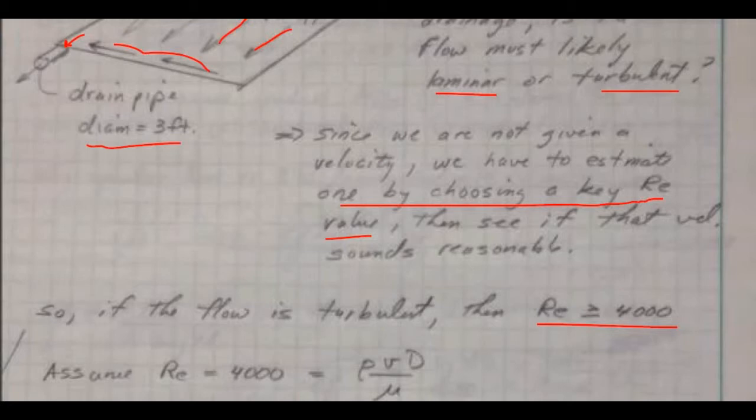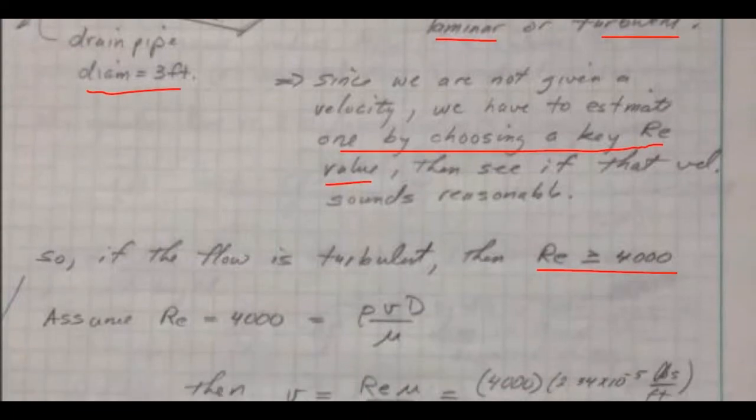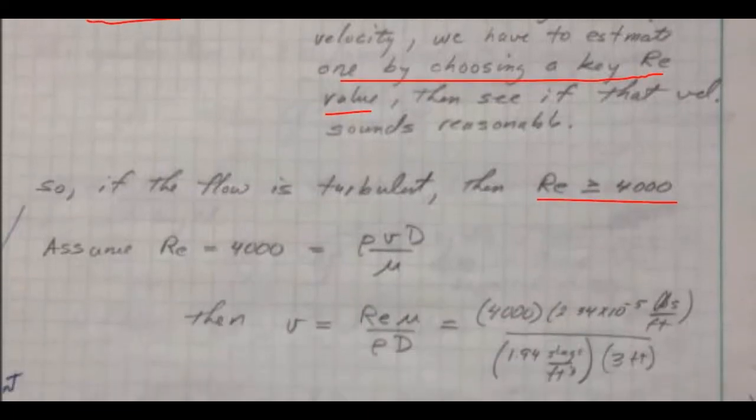So if the Reynolds number is 4,000, and we know the diameter of the pipe, we know the viscosity of the water, we know the density of the water, so we can figure out what the velocity would be. So we plug all these terms in.